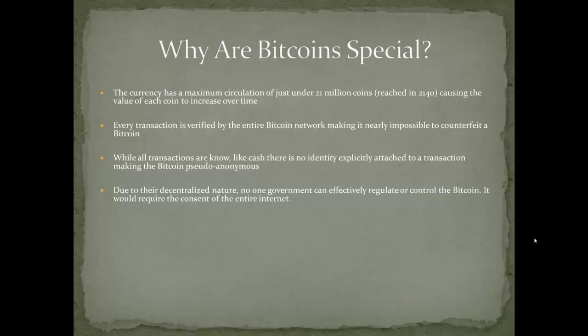Bitcoin is really smashing two amazing concepts together: it's taking digital currencies and their divisibility — because digital currencies are just numbers in a computer, you can break them into any units as small as you want — and combining that with something like the scarcity of gold. You can only ever make 21 million bitcoins; we'll reach that in 2140. Over time they become more valuable, but you can simply break them into smaller and smaller units. Right now the price of Bitcoin is hovering around a hundred dollars; a couple of years back it was around four dollars; and a few years before that, around five cents.